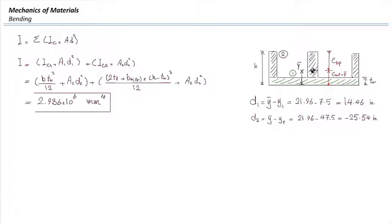One hint: this moment of inertia applies when we transform the section to steel. If we transform to wood instead, we get a different moment of inertia. However, the location of the centroid is unchanged regardless of which material you transform to. For the moment of inertia, it depends on which section you transform to. If the moment of inertia for steel is 2.986 million, we can divide by the n-factor to get the equivalent moment of inertia for the wood section.